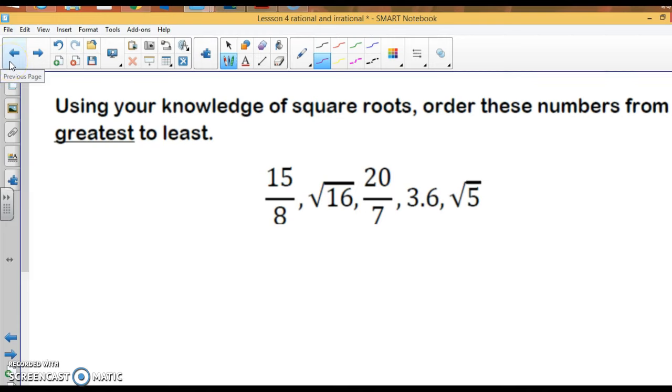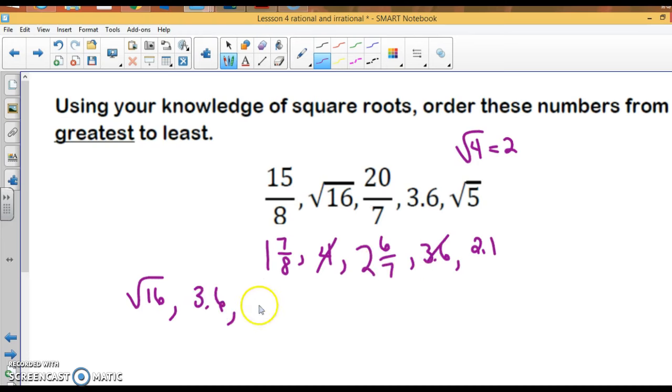All right. Using your knowledge of square roots, order these numbers from greatest to least. All right, so let's change these all to decimals. 8 goes into 15 one time, remainder 7, that's almost 2. The square root of 16 is 4. 20/7, 7 goes in there 2 times and my remainder is going to be 6, so about 2.7. And I've got 3.6. And then the square root of 5. Well, we know the square root of 4 is 2, so wouldn't it be a little bit more, so I'm talking about maybe 2.1? All right. So let's go from greatest to least. Which number here is obviously greatest? The square root of 16. I'm going to cross that out. Then I've got 3.6, then I've got 2.7 which is 20/7, then I've got 2.1 which is √5, and then I've got 1.7 which is 15/8.